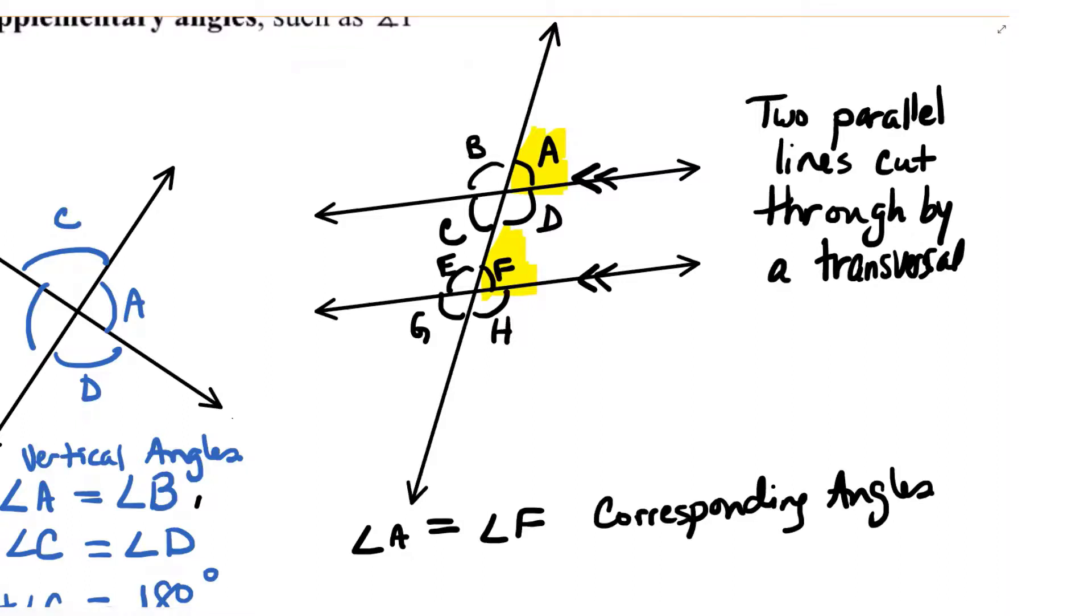Another relationship in this diagram that's unique to this type of diagram would be the relationship between angle A and angle G. They're on opposite sides of the transversal. And they're on the outside or exterior of the two parallel lines.